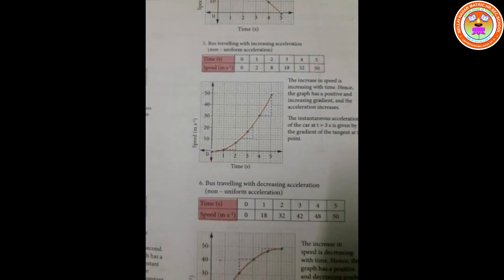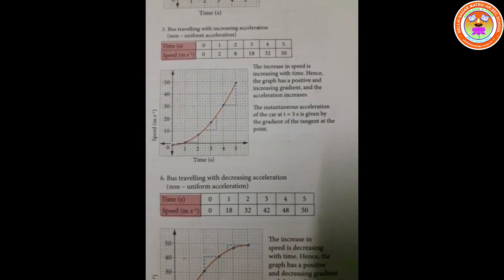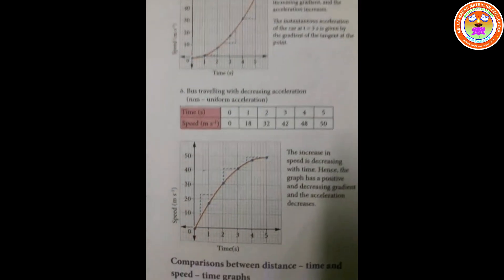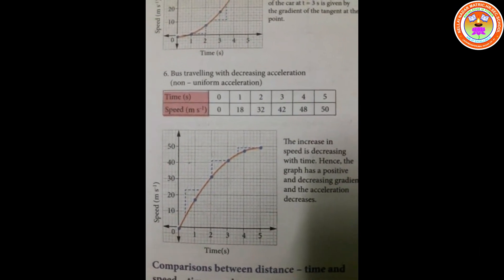Next: bus travelling with increasing acceleration. There is a change in acceleration here — for each second there is an increase in speed, so we say increasing acceleration. The increase in speed is increasing with time. And finally: bus travelling with decreasing acceleration — the values are getting decreasing, and when we divide, we see how it is decreasing. I hope you all understood. Thank you.